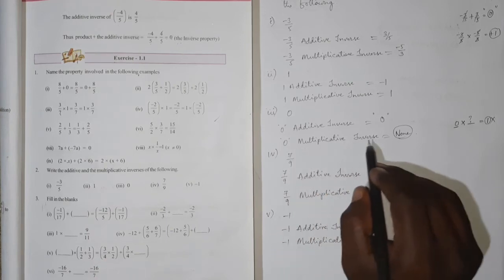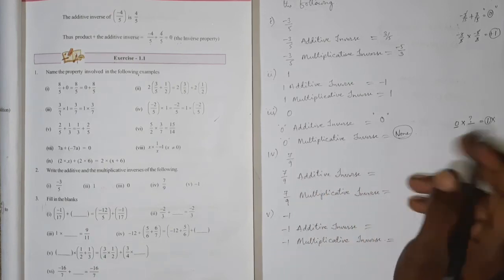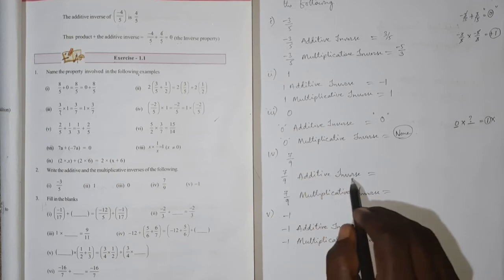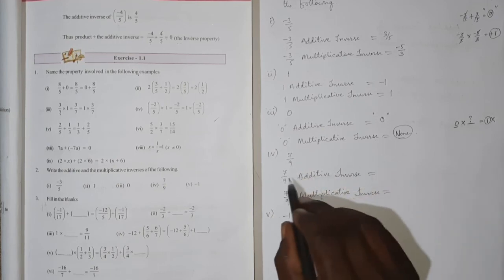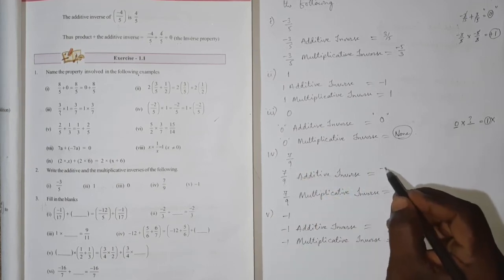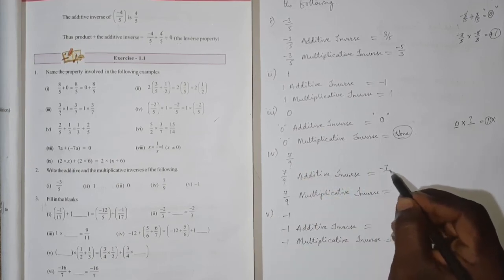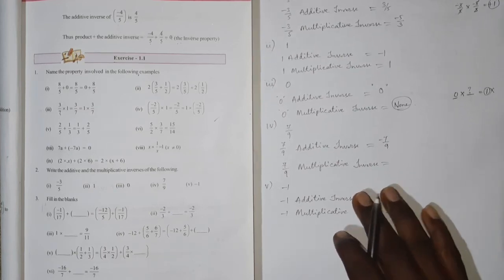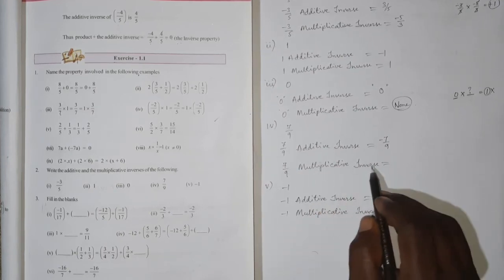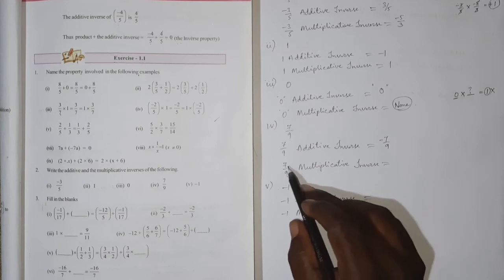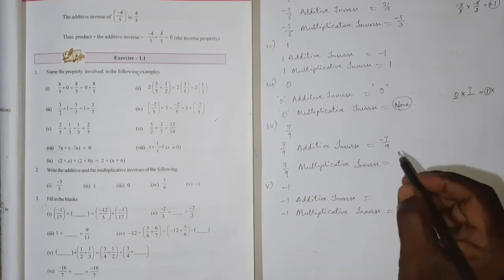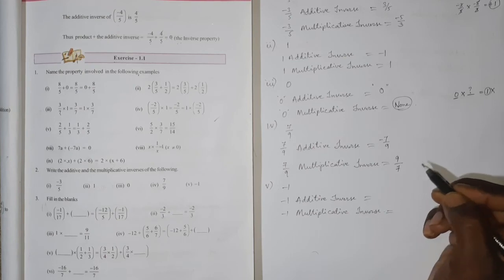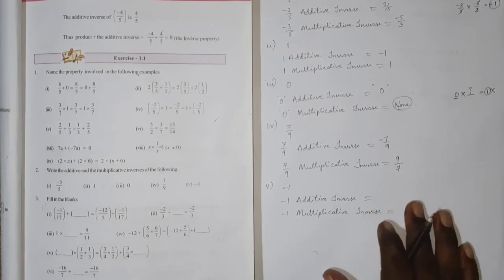Next, minus 7 by 9. The additive inverse of minus 7 by 9 is plus 7 by 9. The multiplicative inverse is the reciprocal, which is minus 9 by 7.